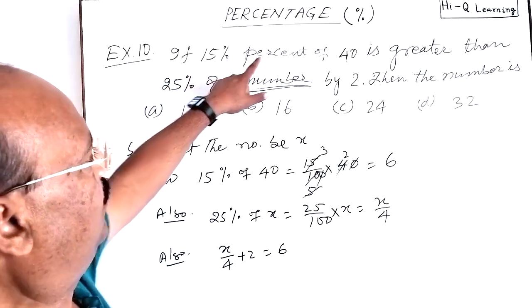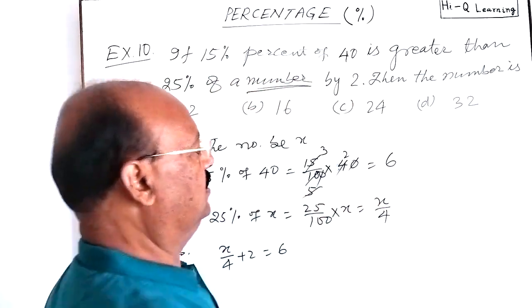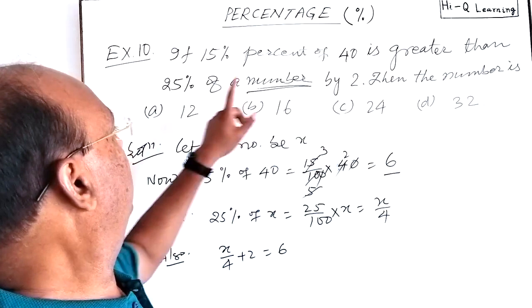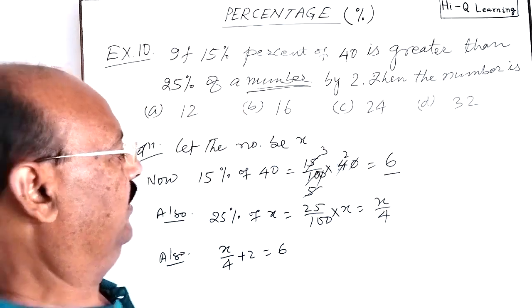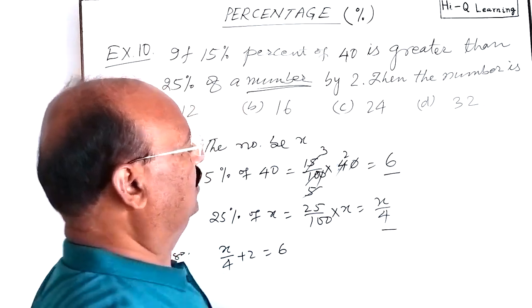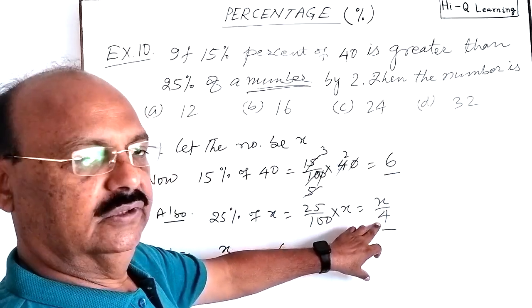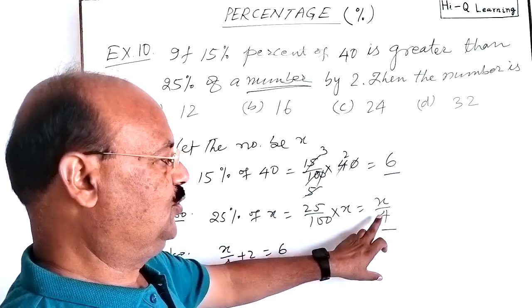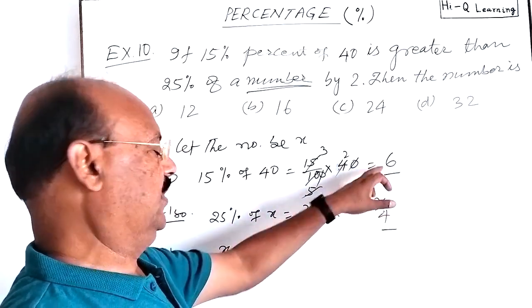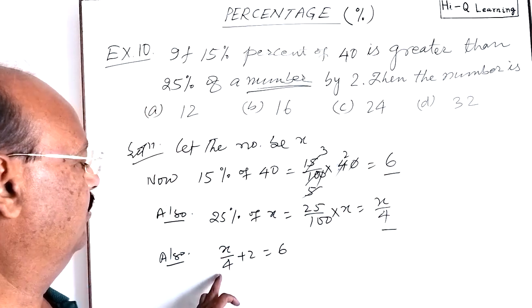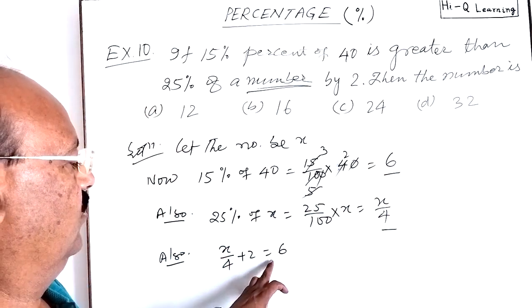How? Given, 15% of 40 means 6 is here. We have calculated. It is greater than 25% of X, means this much. This is greater than this one by 2. So if you add 2 here, both the numbers will become equal. So X by 4 plus 2 is equal to 6.